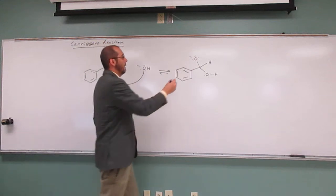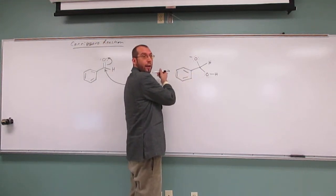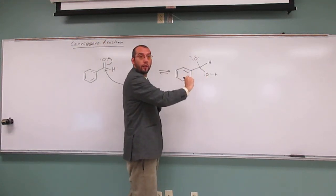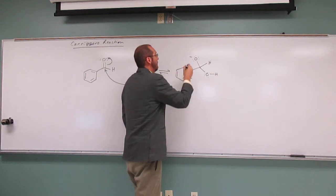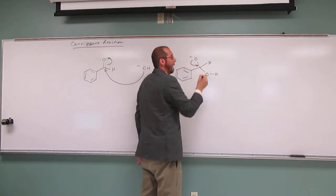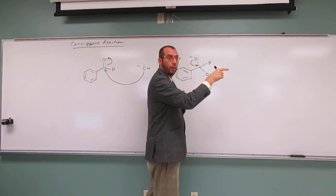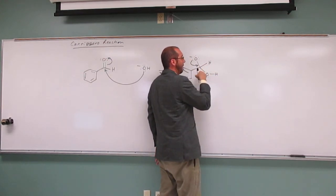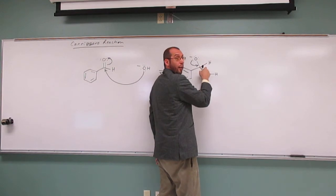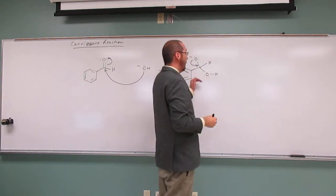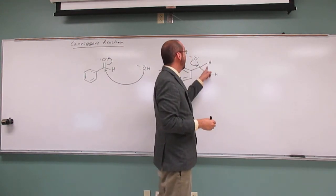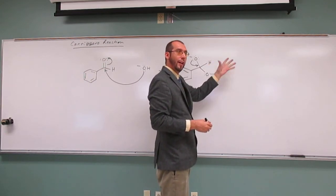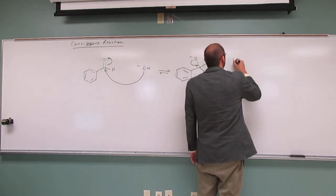Okay, so like we were saying, most of the time probably it's going to go back that way with the leaving group leaving as the OH. But every once in a while, and this is how the Cannizzaro reaction goes forward, it's going to have the leaving group be this hydride here. So in order to have that hydride react with another benzaldehyde, we need to write that benzaldehyde. So let's go ahead and do that.